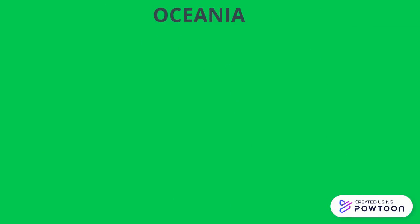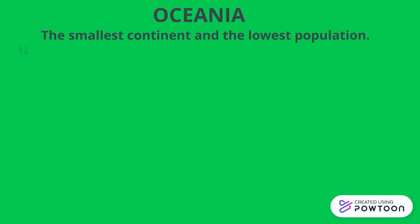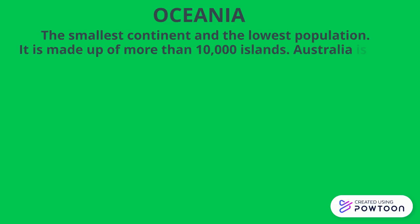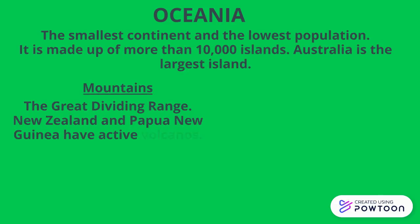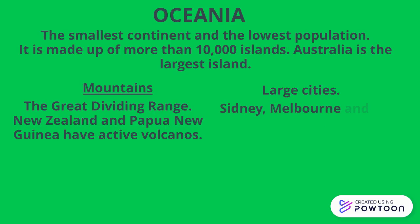Oceania. The smallest continent and the lowest population. It is made up of more than 10,000 islands. Australia is the largest island. Mountains: the Great Dividing Range. New Zealand and Papua New Guinea have active volcanoes. Large cities: Sydney, Melbourne, and Brisbane. And languages: English, mainly.